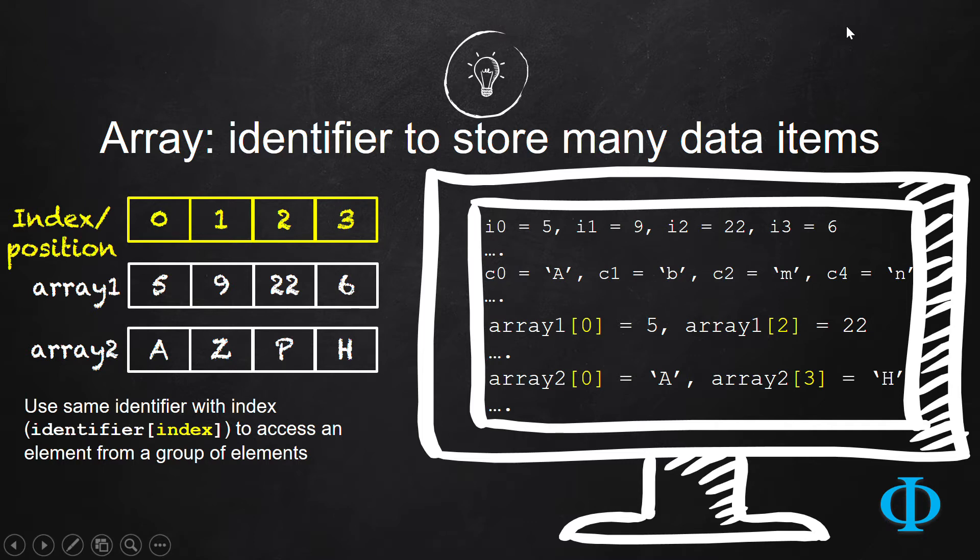An array is an identifier that can store many data items under the same name. In order to access an element inside an array, you have to use the identifier name along with an index such as 0, 1, 2, 3, like this to access an element at a particular location.